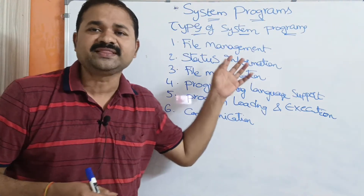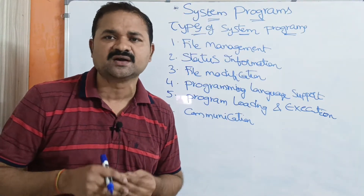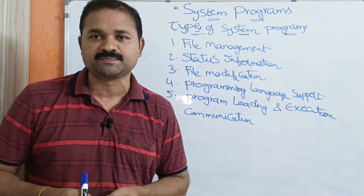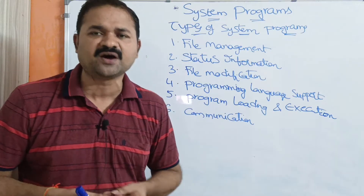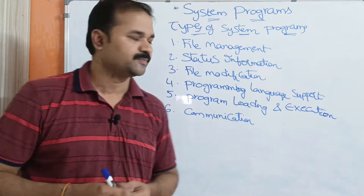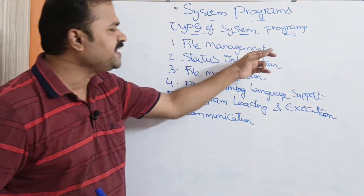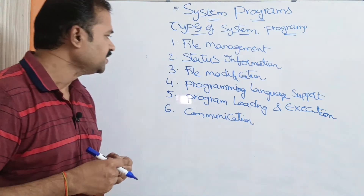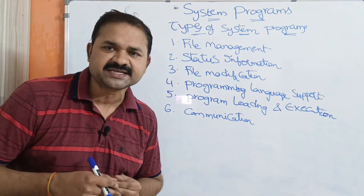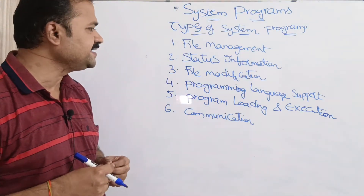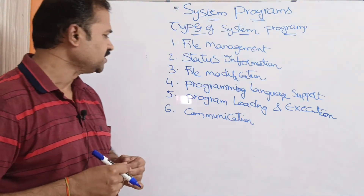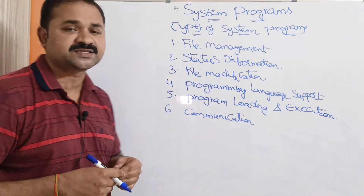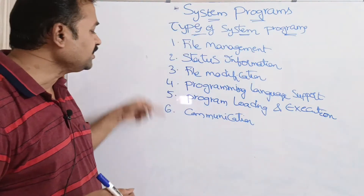Mainly, we have six types of system programs. All these system programs are available with the operating system installation, so once an OS is installed, most of these are available by default. The six types are: file management, status information, file modification, programming language support, program loading and execution, and communication system programs.